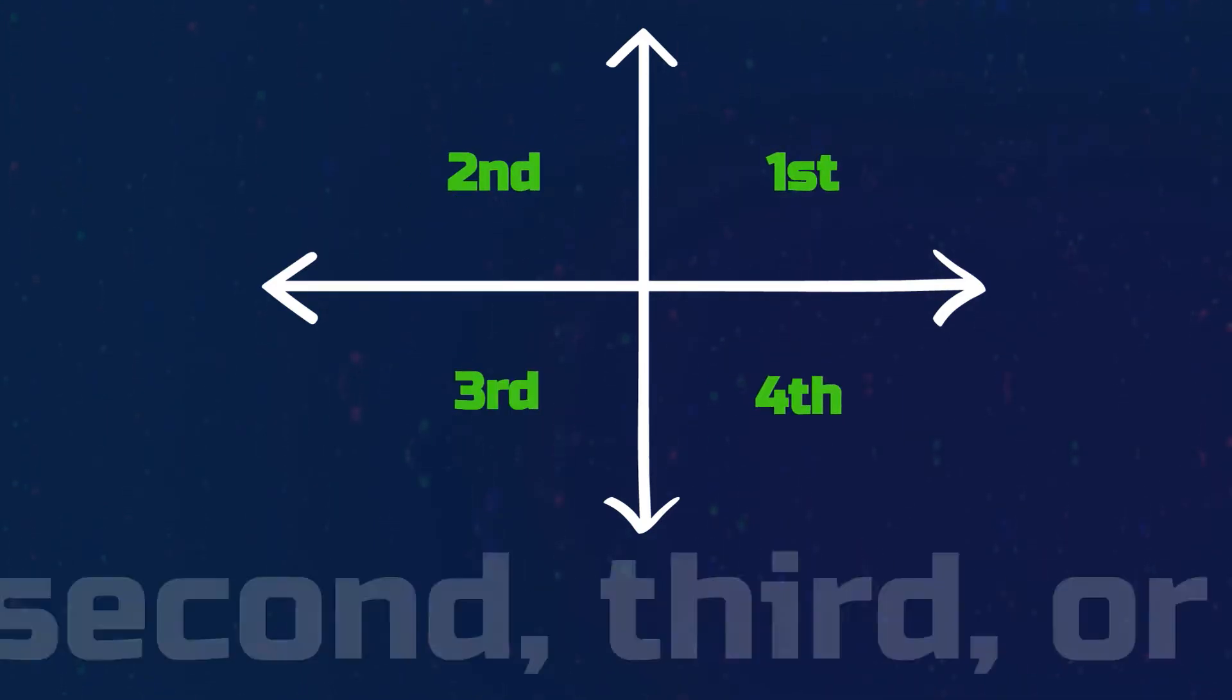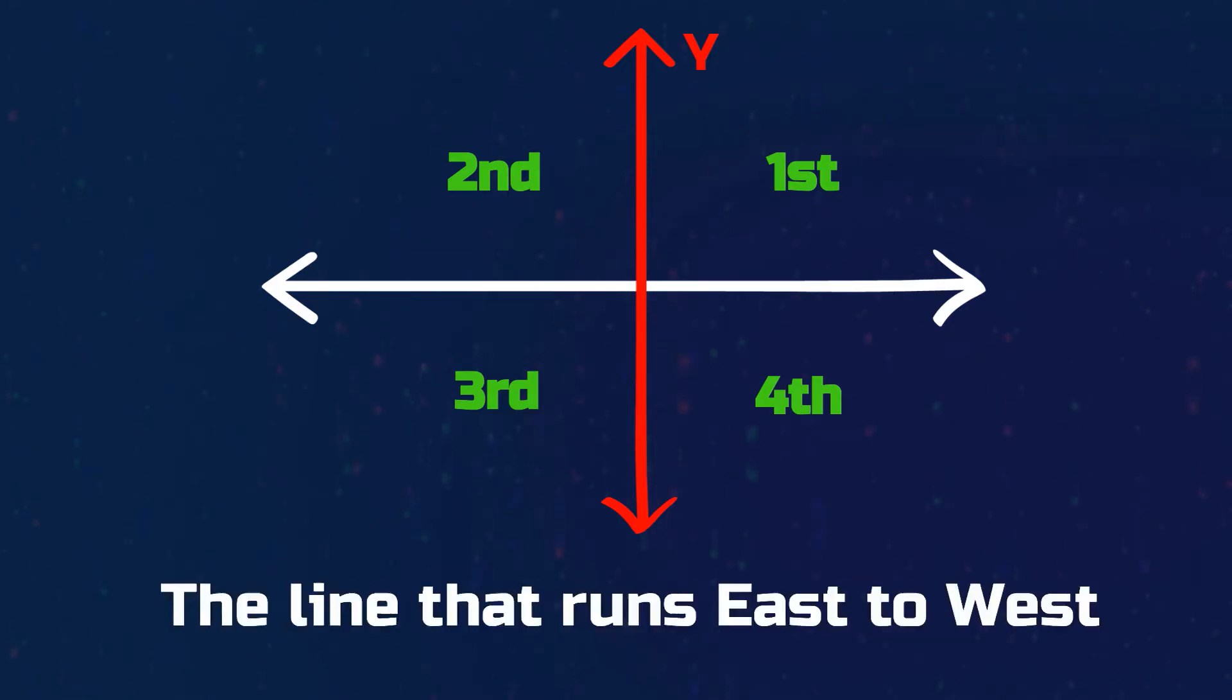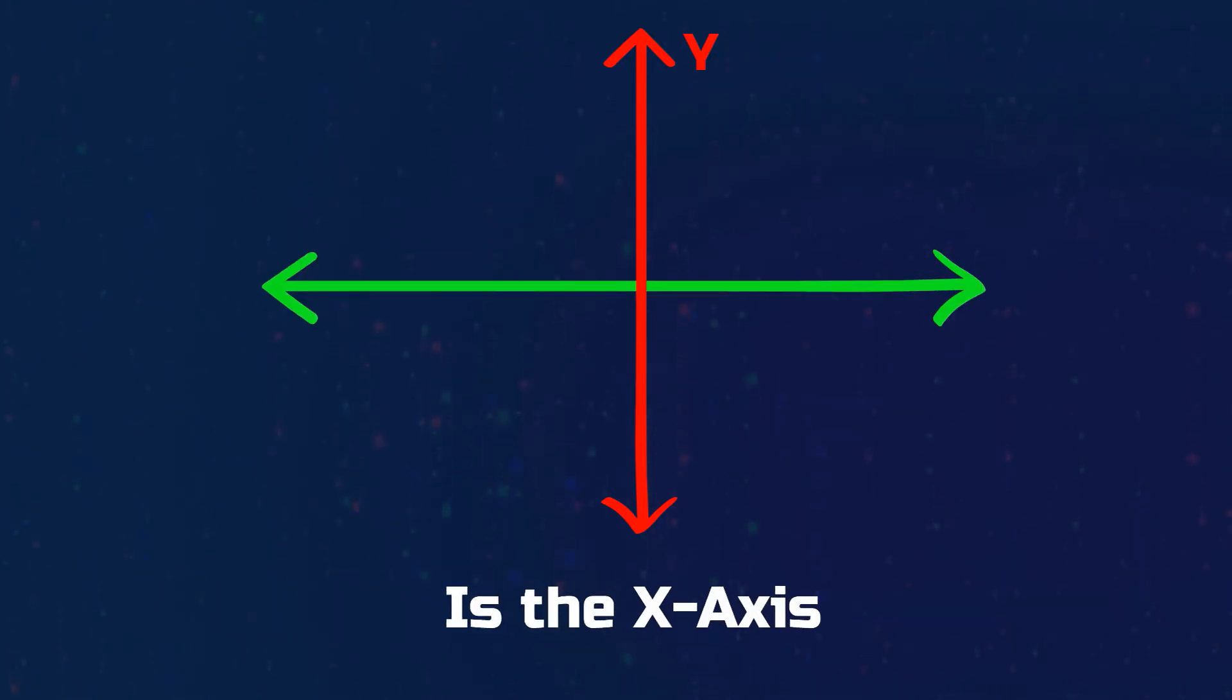First, second, third, fourth. The Y axis runs south to north. The line that runs east to west, we call that line the X axis.